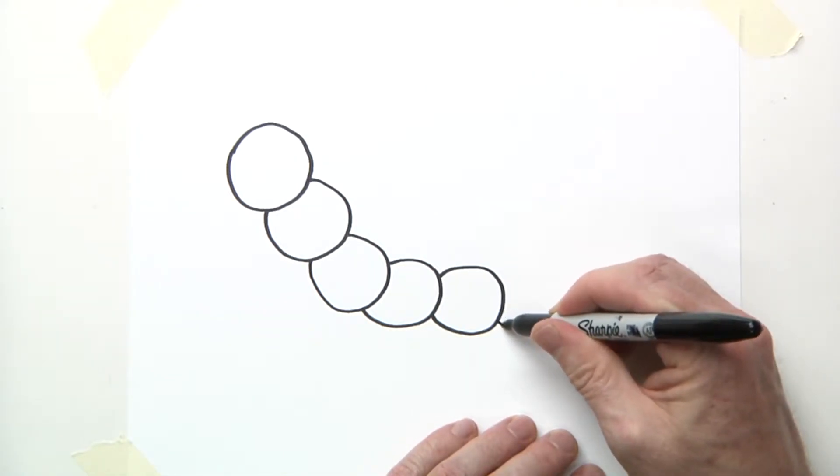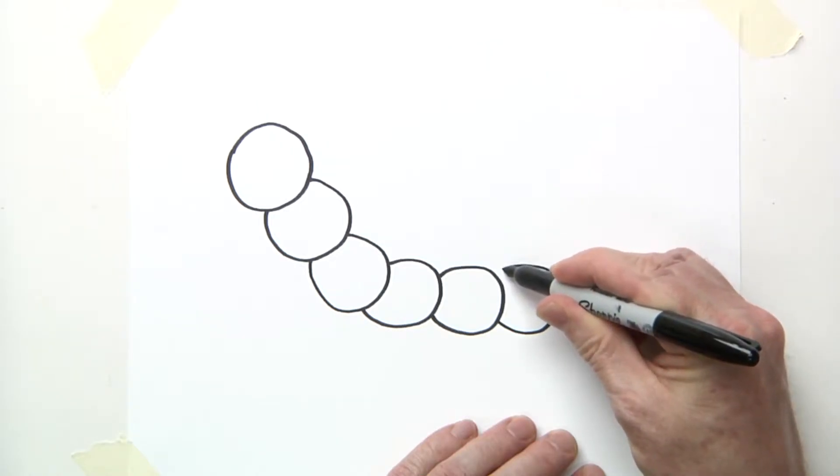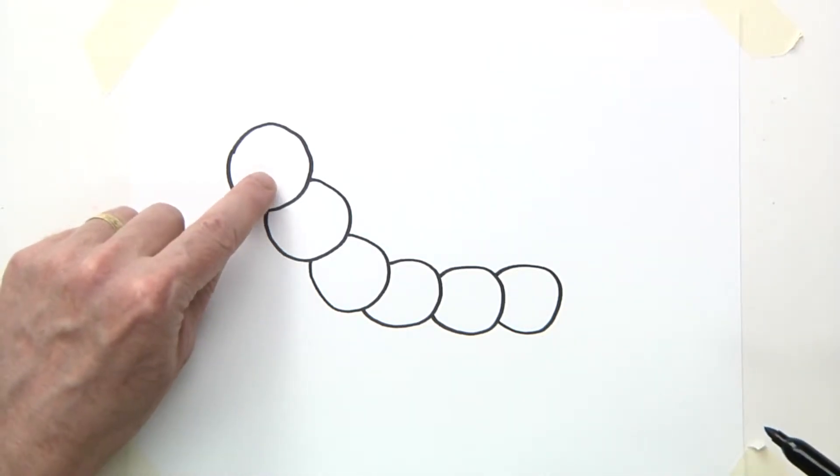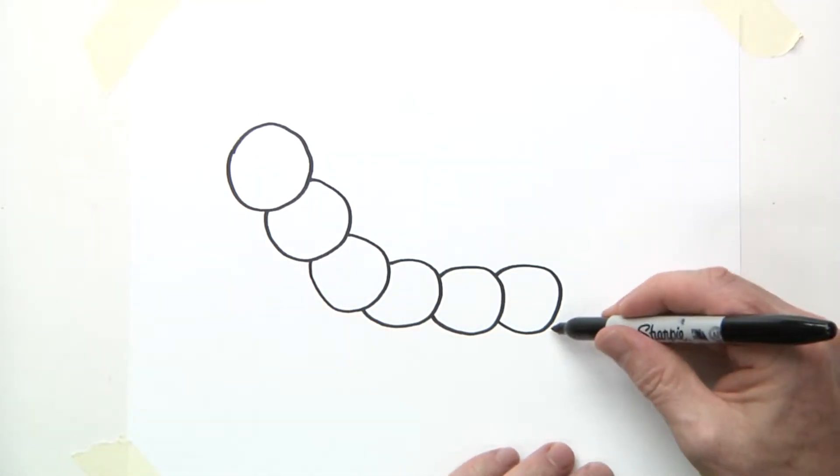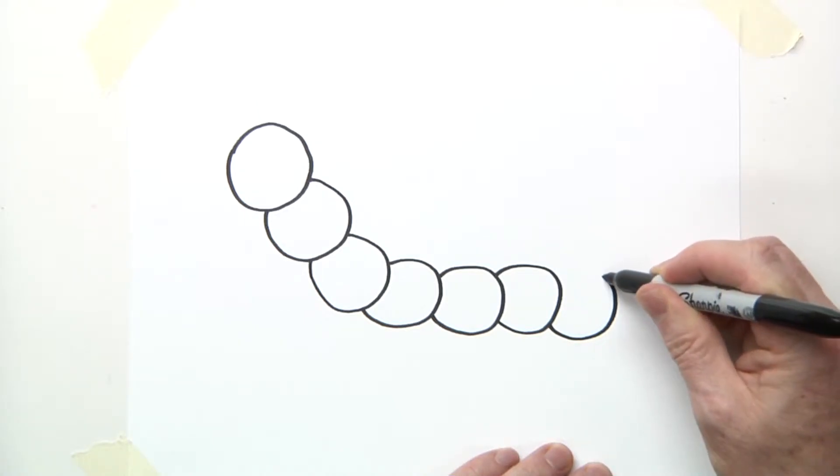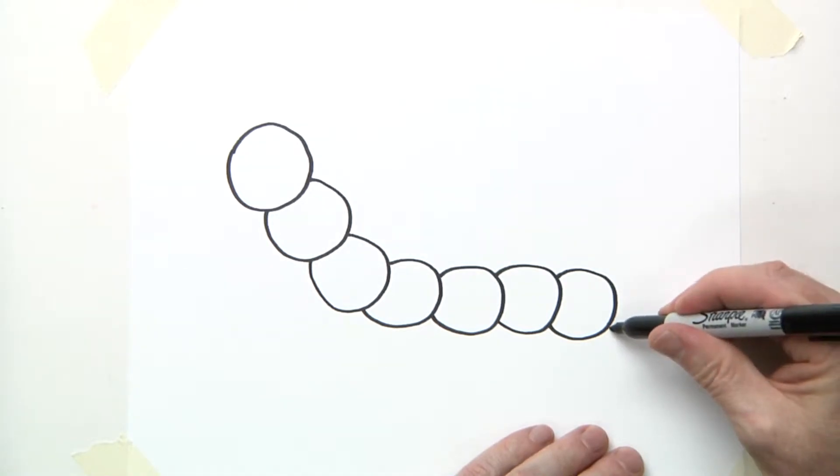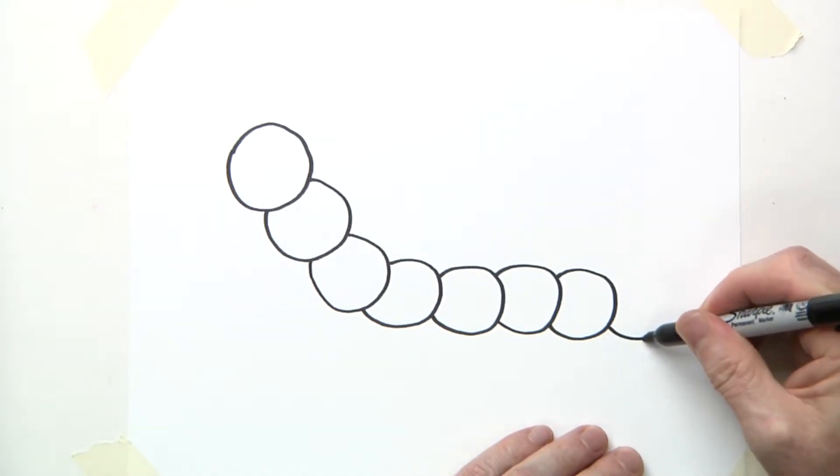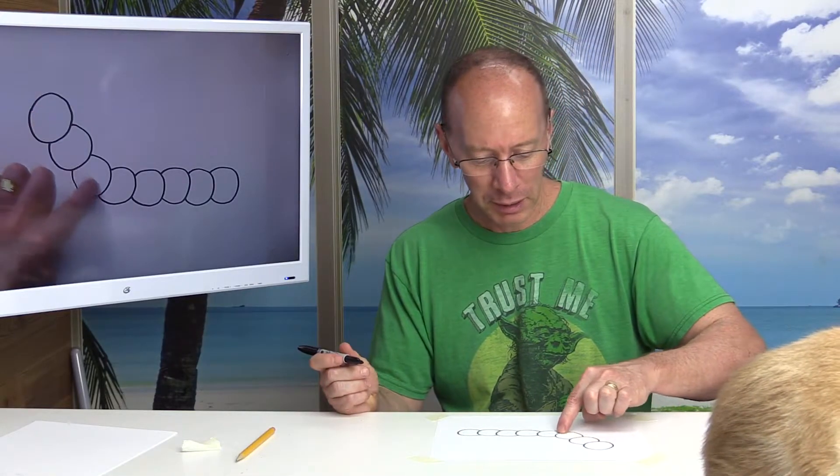So now I'll do another one here. Let me see how many I have here. I have one, two, three, four, five, six. Let's draw two more. There's seven. And we're going to do number eight right here. All right, we got our shape of our millipede right here.